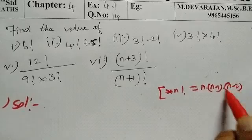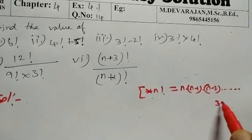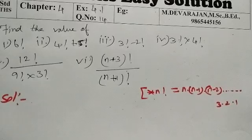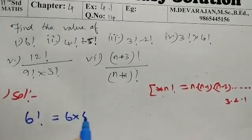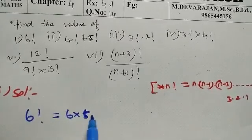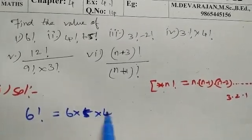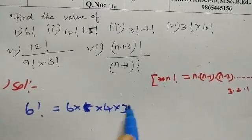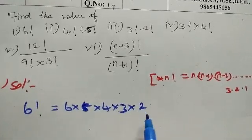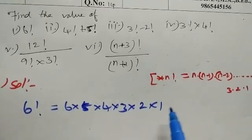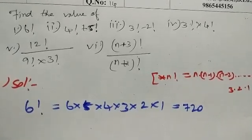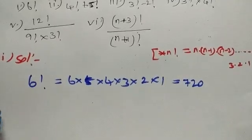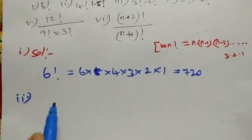So this is 6 factorial equals 6 into 5 into 4 into 3 into 2 into 1, which equals 720. Okay, now the second one.